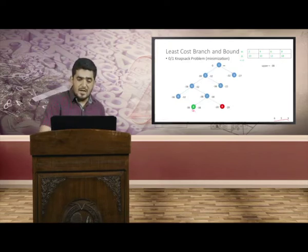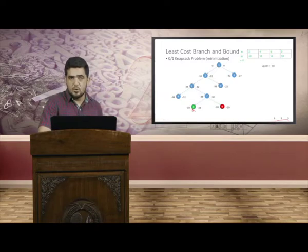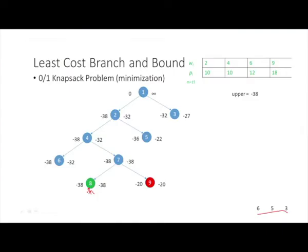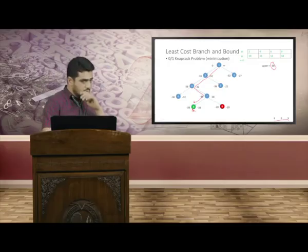To display the solution, we traverse the parent links from the solution node. Node 8's parent is node 7, node 7's parent is node 4, node 4's parent is node 2, and node 2's parent is node 1, whose parent is null. The best minimized cost obtained is minus 38. This is how we find solutions using the least cost branch and bound.